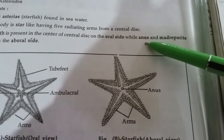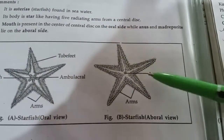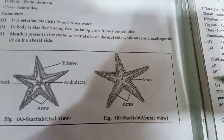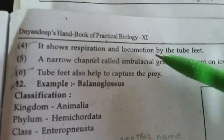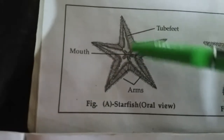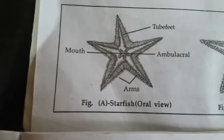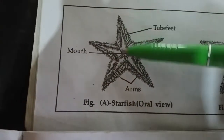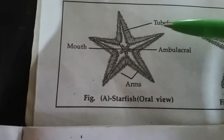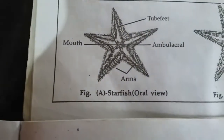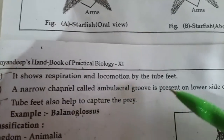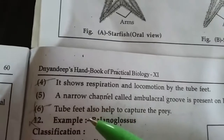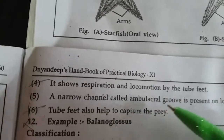In the aboral view, you can see the anus and the madreporite. This is the anus of the starfish. It shows respiration and locomotion through the tube feet. You can see the tube feet here on the arm. These are the tube feet in the arm. The narrow channel called the ambulacral groove is present on the lower side of each arm, and tube feet also help to capture their prey.